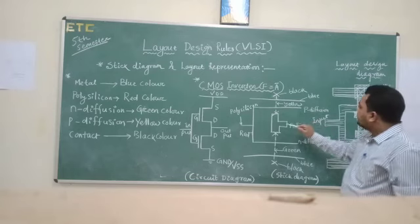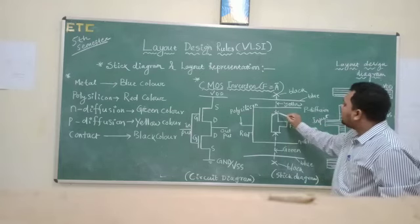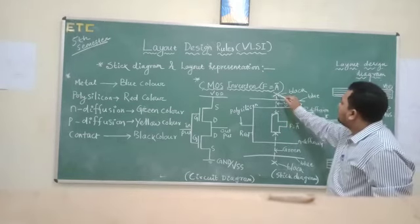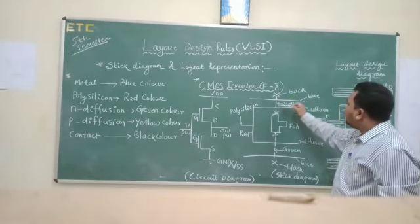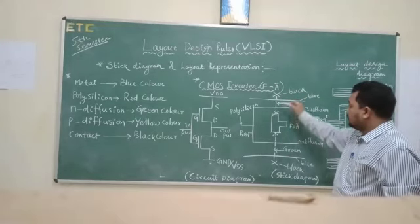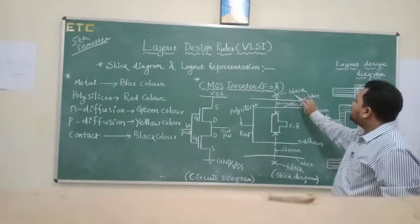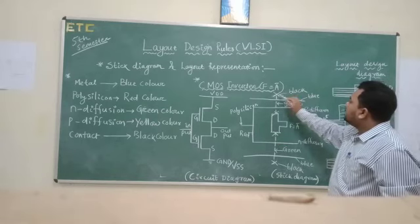And finally, these are your metal contacts. These are connected to any other surfaces. So these are represented in black color.